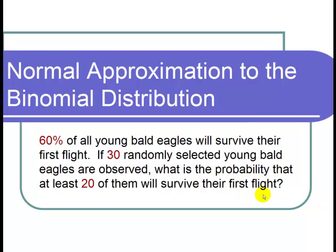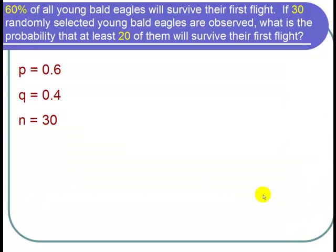Let's start by writing down the cast of characters. Since 60% will survive, that's the probability of success, so p equals 0.6. Q is 1 minus 0.6, so q equals 0.4. And there are 30 bald eagles randomly selected, so the sample size n equals 30.